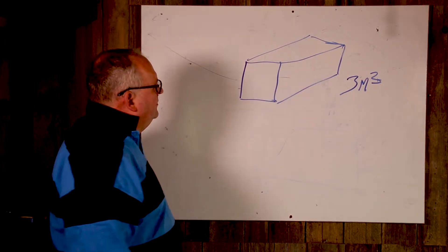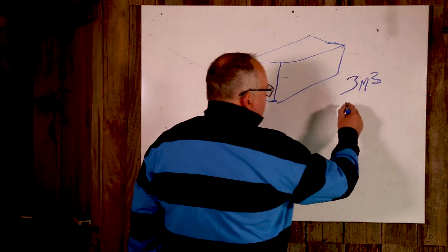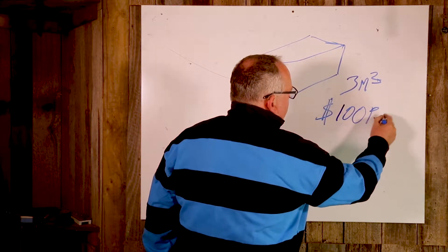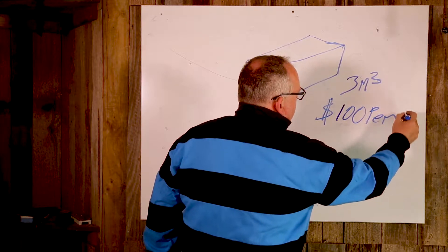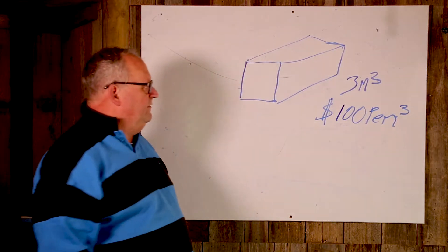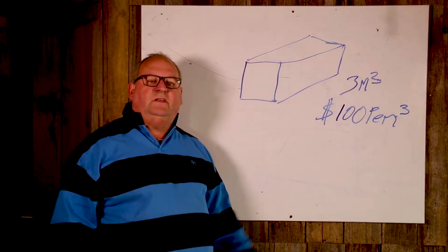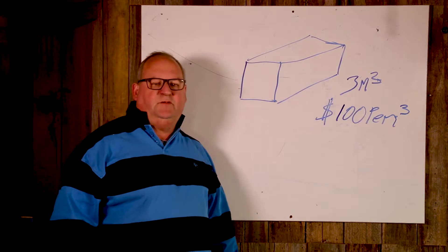Because when it comes down to this, it's going to cost me $100 per cubic meter to get rid of. So I've worked out that the volume of the hole is three cubic meters.